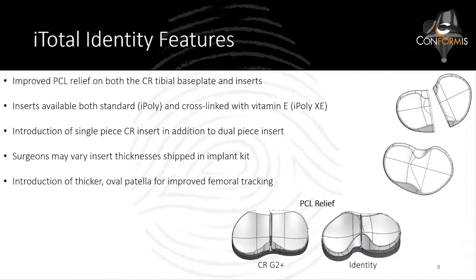The polyethylene still comes in two-piece or one-piece. Anecdotally, surgeons who were doing G2+ CR knees tend to still use the two-piece poly inserts, while surgeons coming from posterior-stabilized knees who are trying the identity CR are sticking with the one-piece insert — but you can pick either one. You can also choose the implant thickness you want shipped in the kit. We also increased the patella: it is now thicker and oval, which will further improve bone coverage and patella tracking and elevate the patella away from the femoral component.